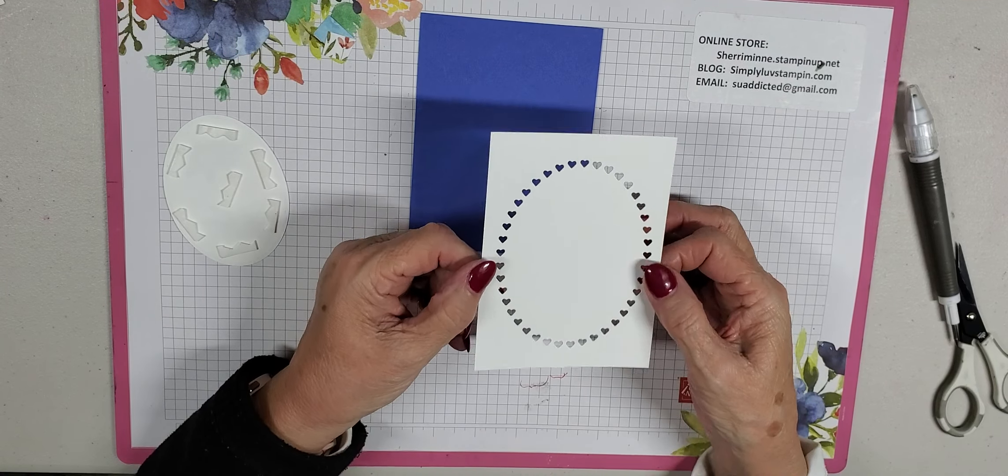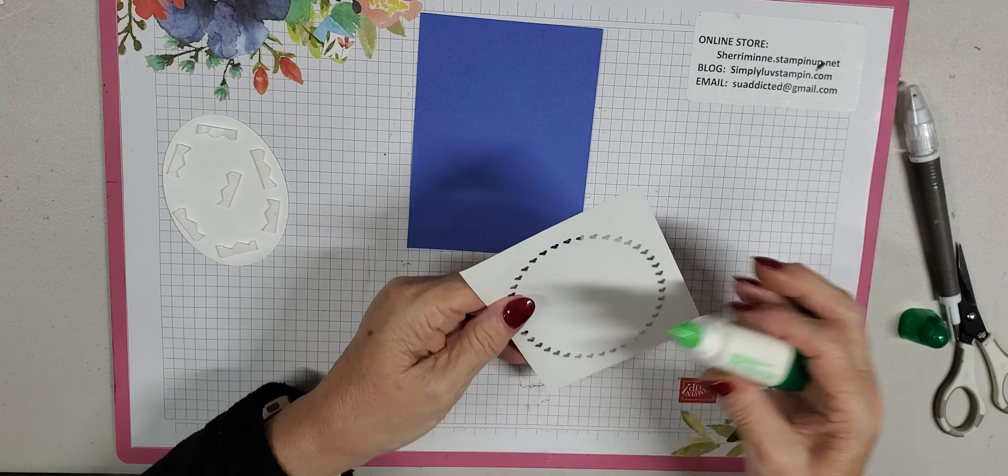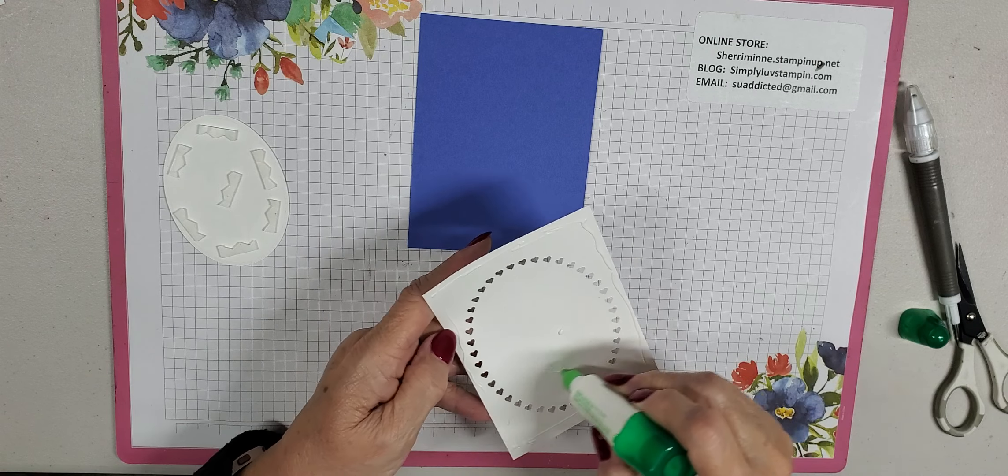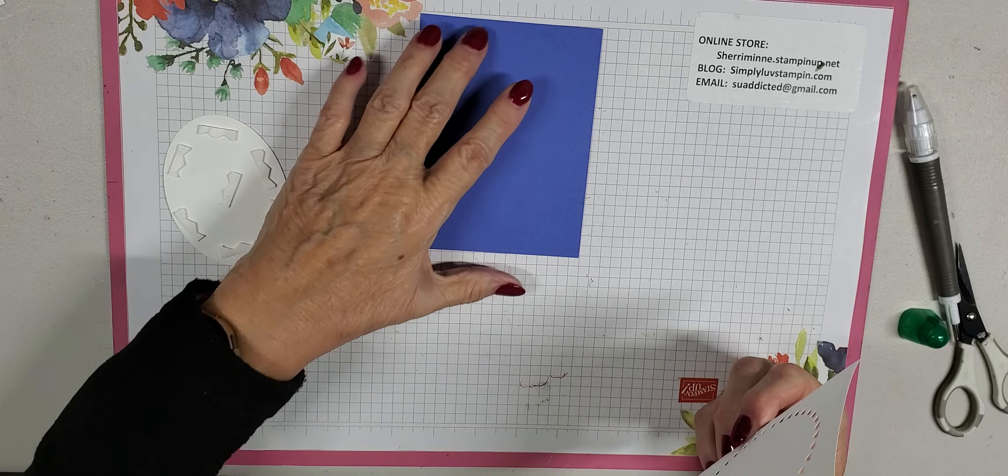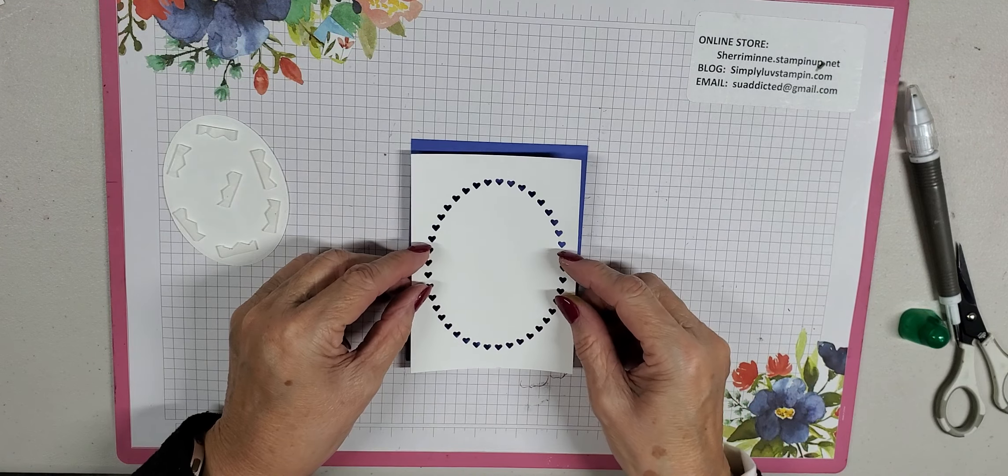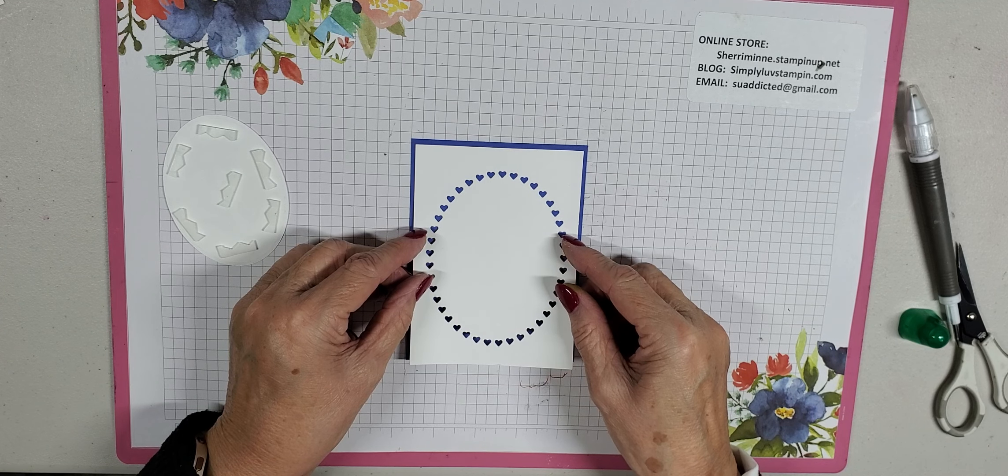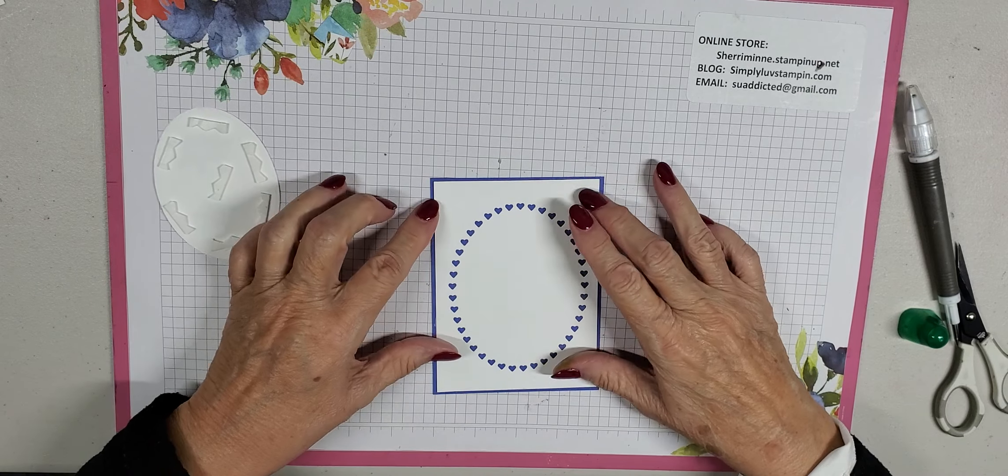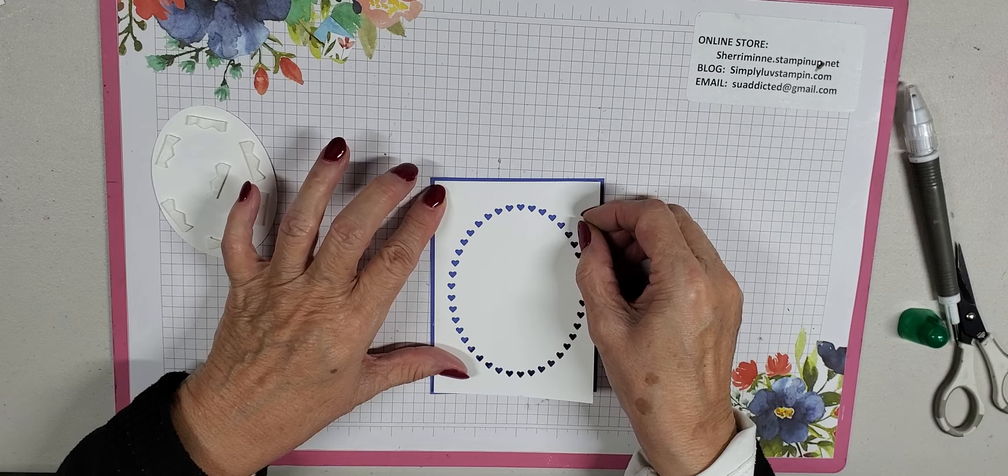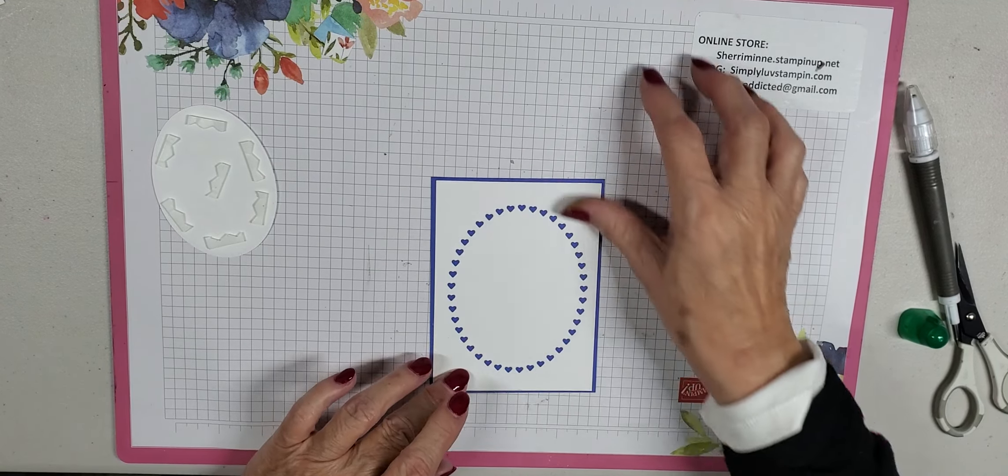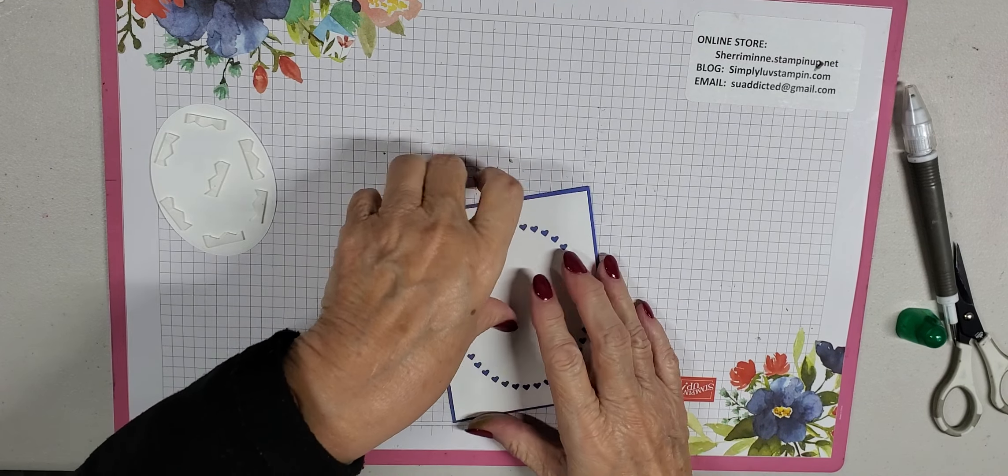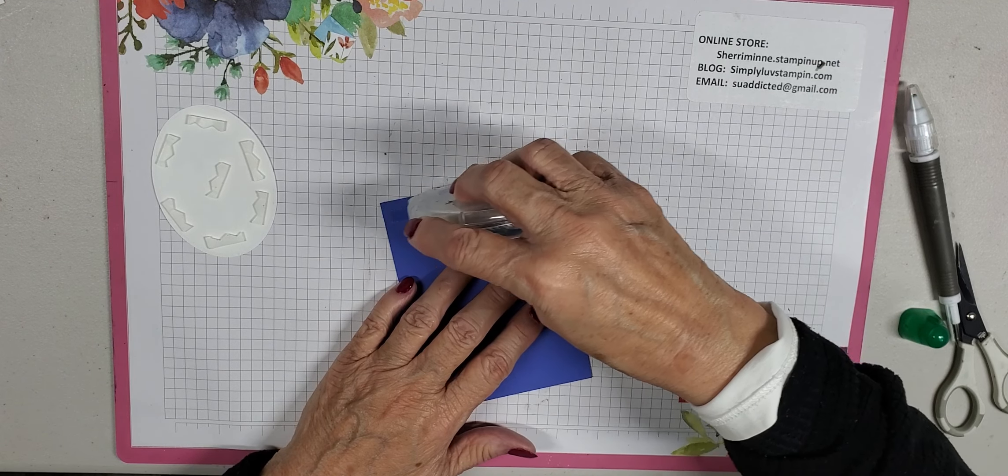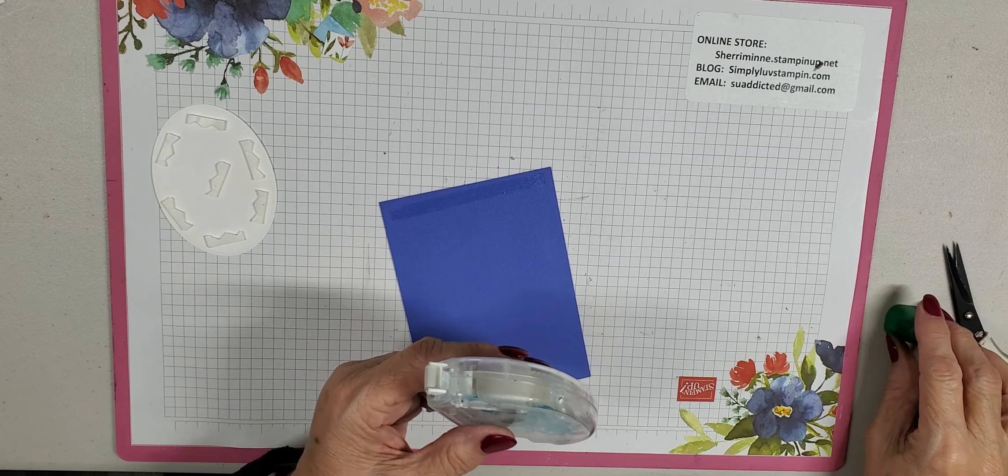I think we're ready to start assembling. So we will take our heart-shaped oval piece. I'm going to put a little bit of liquid glue on it. Not on the hearts, just on the edges. So that didn't go where I wanted it to. Not the straightest I've ever done, but it's okay.